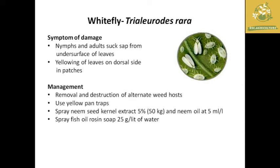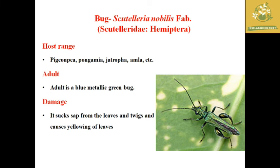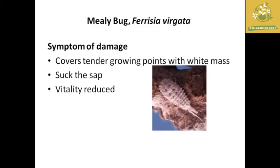The next pest is a bug with scientific name Callidea noblis, order Hemiptera. It has a wide host range. The adult is a blue metallic green bug. The damage caused is sucking of sap from the leaves, causing yellowing of leaves.